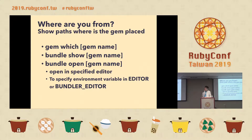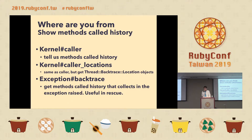We can show source files for gems using the gem which command, bundle show, and bundle open. And to show method call history, the Kernel#caller method tells us the call history. Kernel#caller_locations is the same as caller but returns Thread::Backtrace::Location objects, which makes it easier to get information. The Exception#backtrace method gets the call history recorded when the exception was raised — useful in rescue.